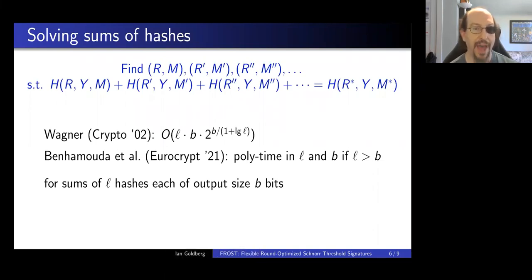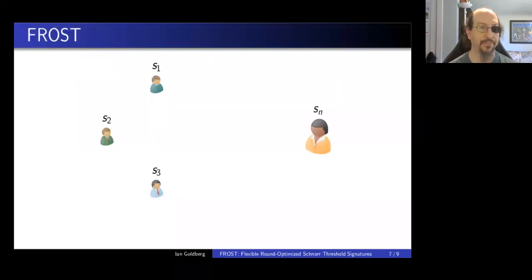So we have this problem that many of the prior threshold signature schemes fall to this parallel attack. So enter FROST. Flexible round optimized Schnorr threshold signatures.